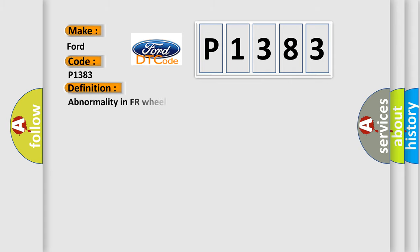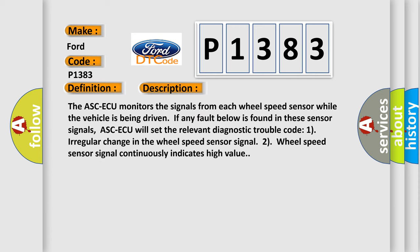The basic definition is abnormality in FR wheel speed sensor signal. And now this is a short description of this DTC code. The ASC-ECU monitors the signals from each wheel speed sensor while the vehicle is being driven. If any fault below is found in these sensor signals, ASC-ECU will set the relevant diagnostic trouble code: 1. Irregular change in the wheel speed sensor signal. 2. Wheel speed sensor signal continuously indicates high value.